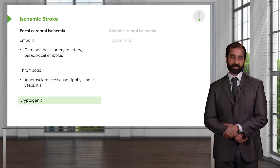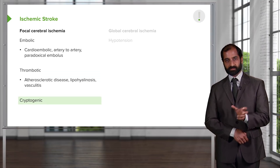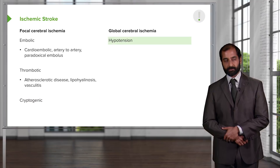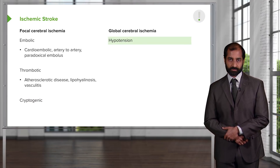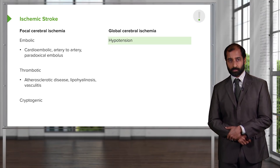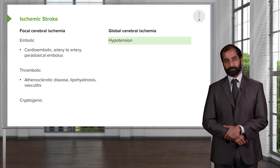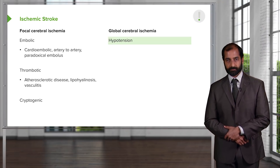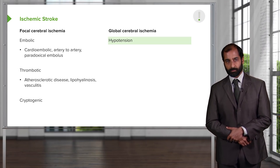Or it could be cryptogenic — in other words, not exactly sure as to what the cause is. That covers focal ischemic stroke. On the global side, your patient may be suffering from hypotension. If the entire body is undergoing hypotension, then there's going to be decreased blood supply to the brain, once again causing ischemic type of stroke — but this time it is global in nature.